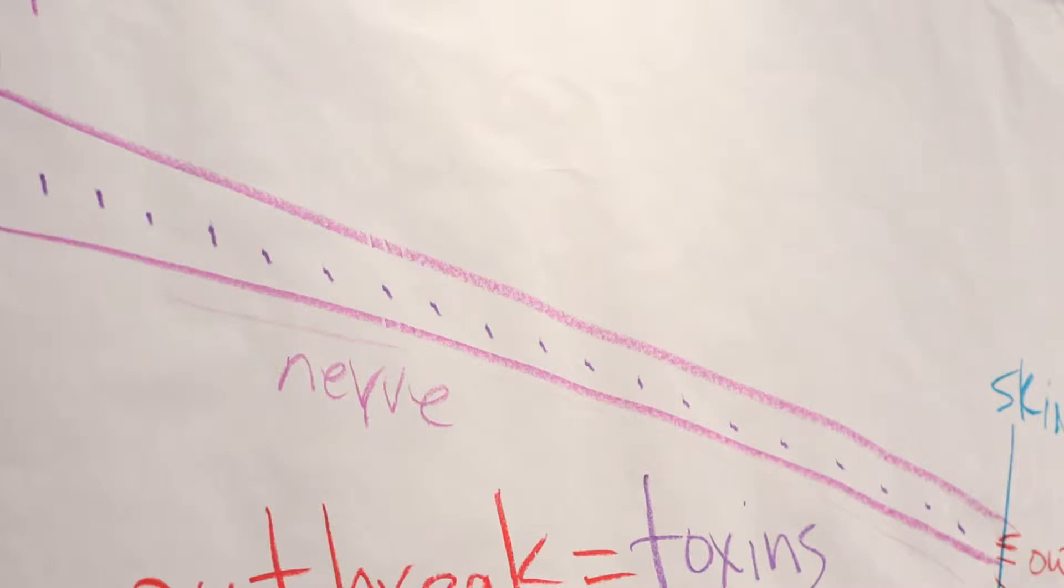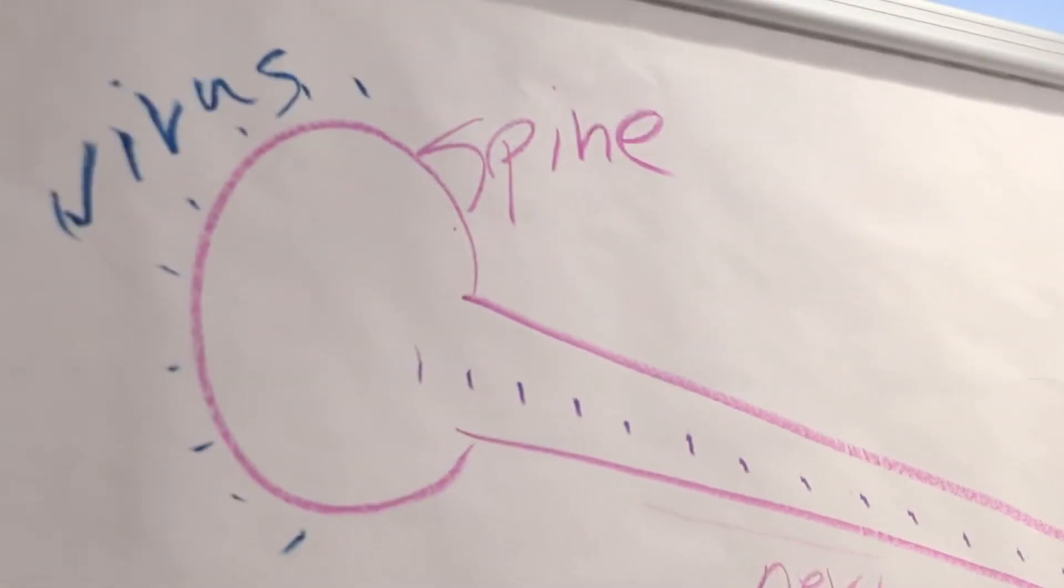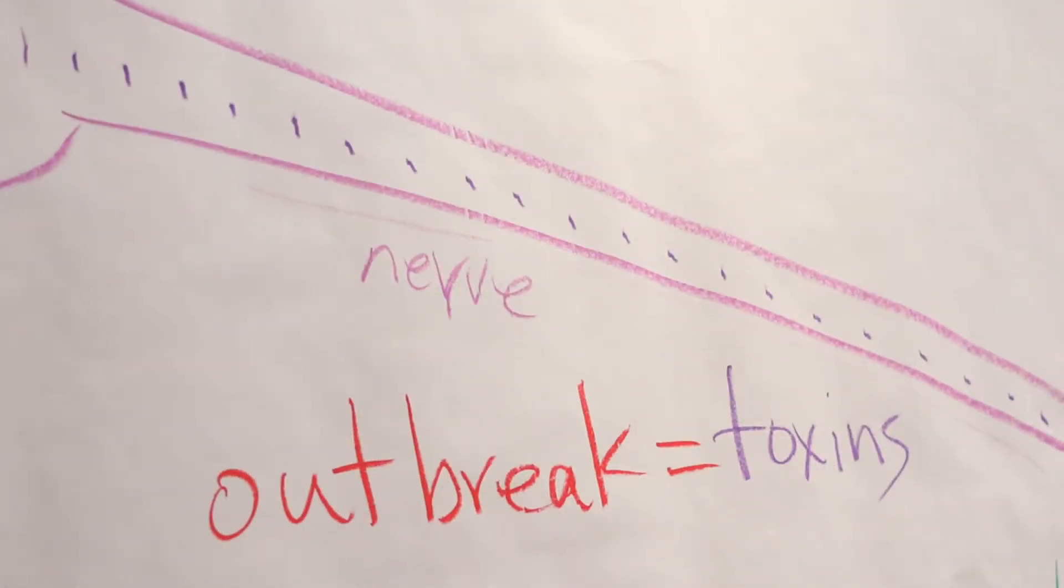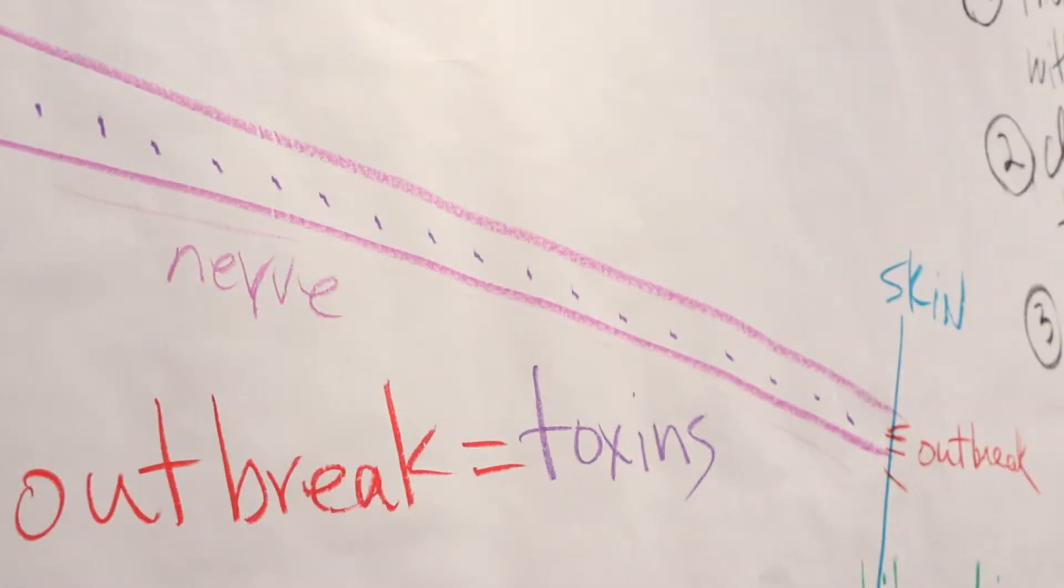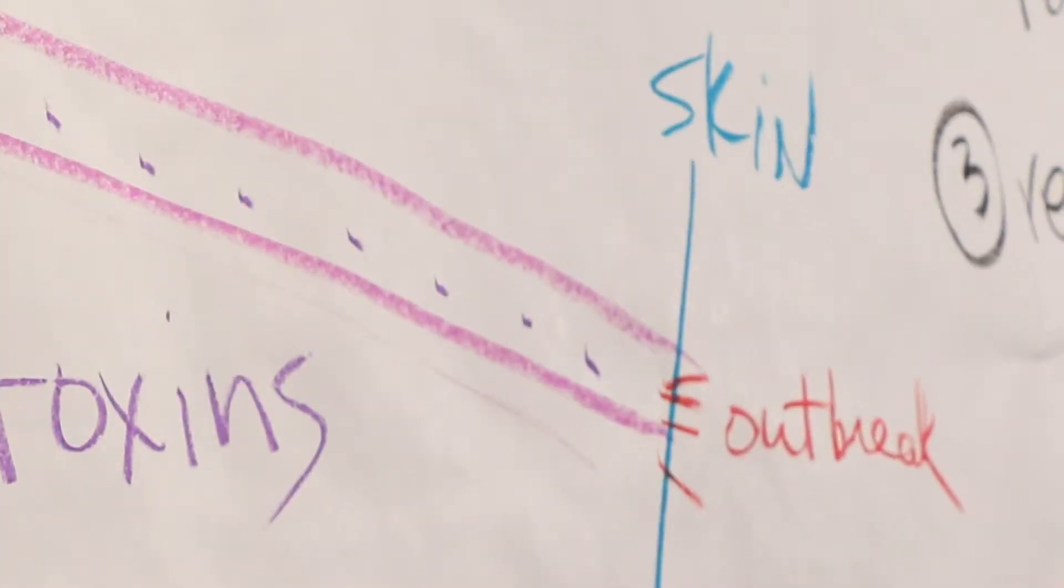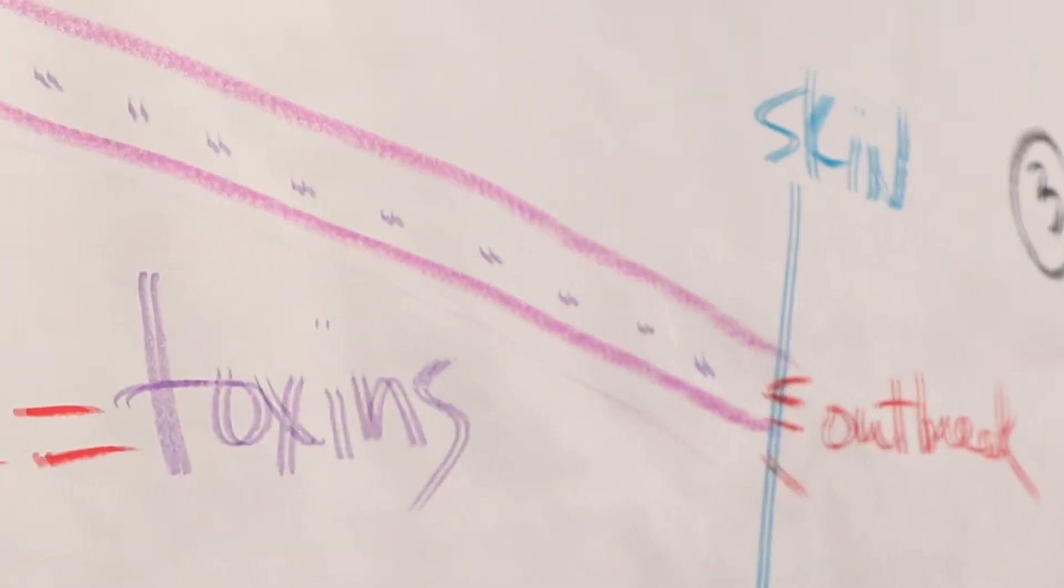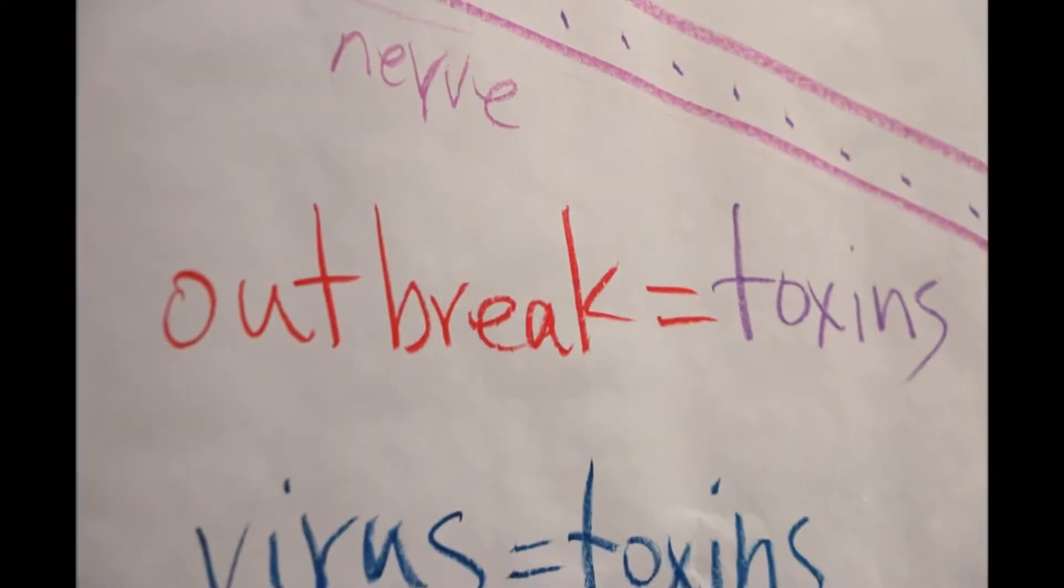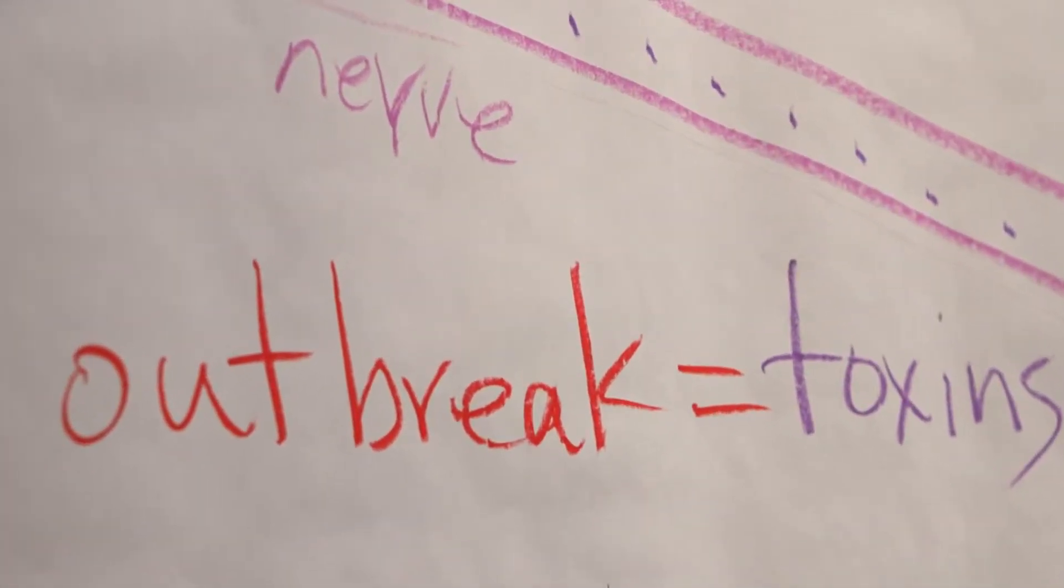This also explains why some people get an outbreak every day. These viruses are dumping toxins and the toxins have now overloaded the nerve. So every day the nerve has to release the toxins and it's like releasing pressure. The frequency of the outbreak is determined by how much toxins are in the nerve. So we have an outbreak equals toxins.